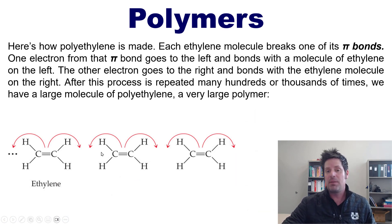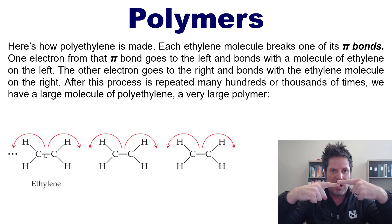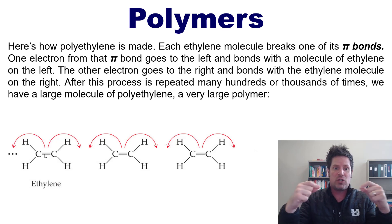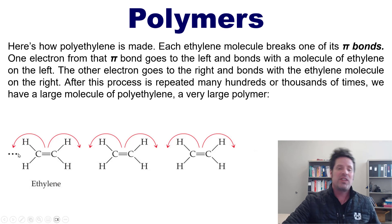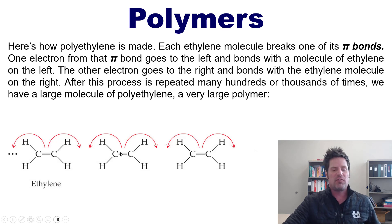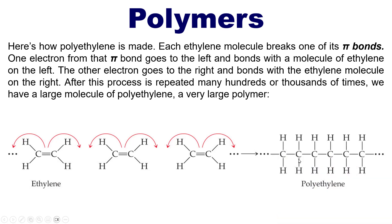This figure from our text shows how the polymerization process occurs. Each ethylene molecule breaks one of its pi bonds — every bond drawn as a straight line represents two electrons shared by those two atoms. One of those electrons flows to the left to form a bond with the neighboring ethylene monomer; the other flows to the right and pairs with the electron from that neighbor's pi bond, forming a bond between those two carbon atoms. This repeats all the way across the entire polymer for hundreds or thousands of repeating units.